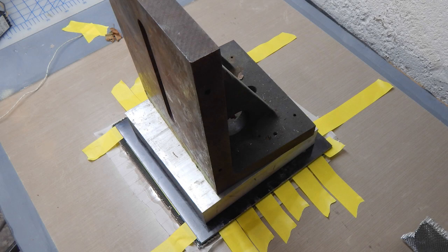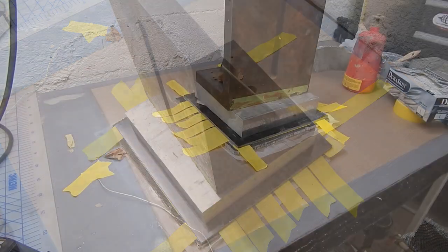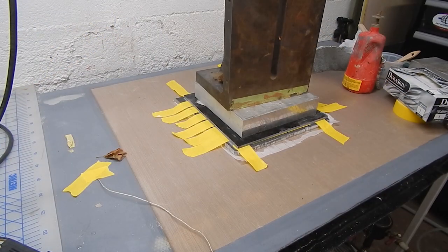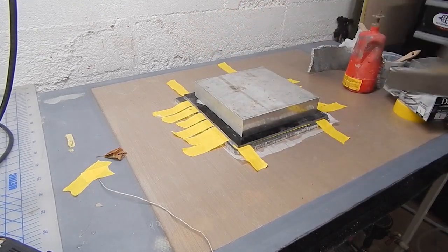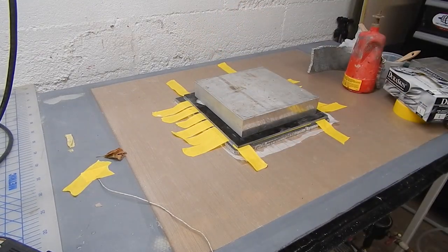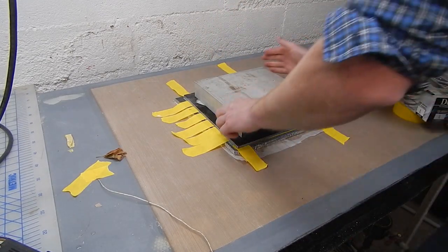So I let it gel and then cure. May have given it a little heat with the warm table. Removed my 85 pound angle plate and a big piece of aluminum.